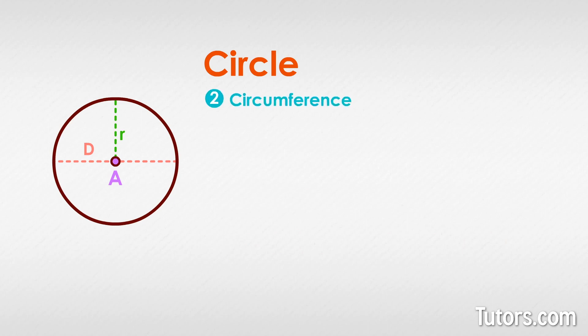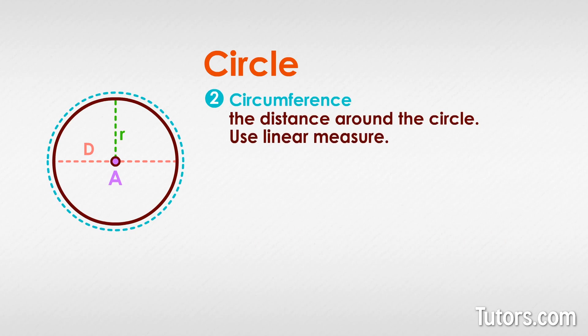Another major part of any circle is its circumference, or the distance around the circle. This is a linear measure. The formulas for circumference can use either the circle's diameter or its radius.